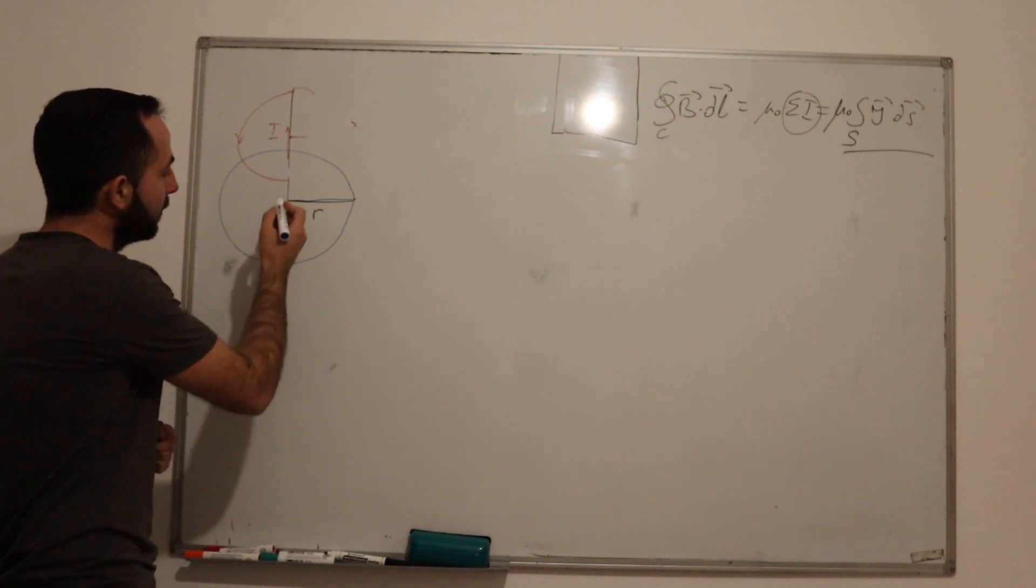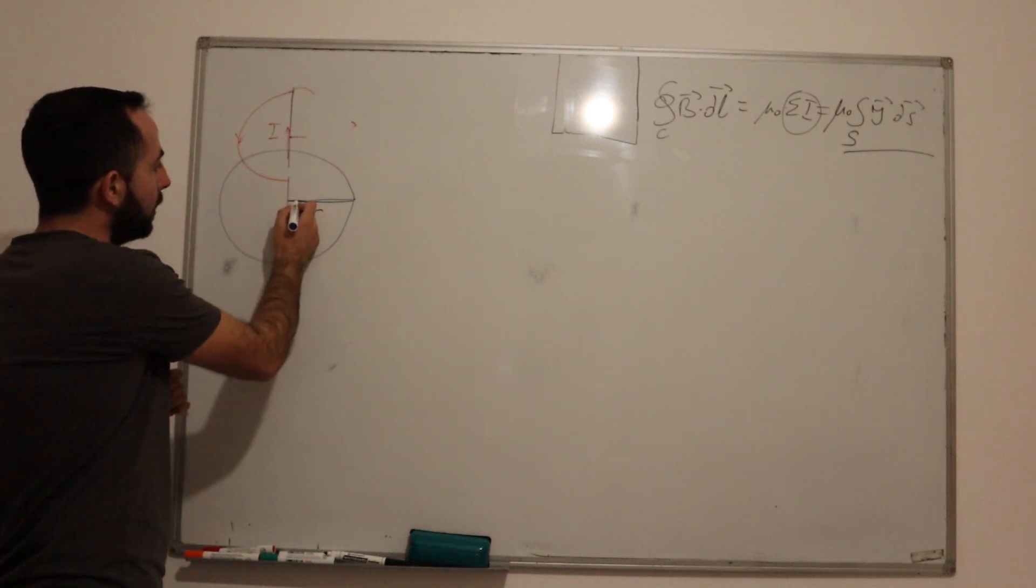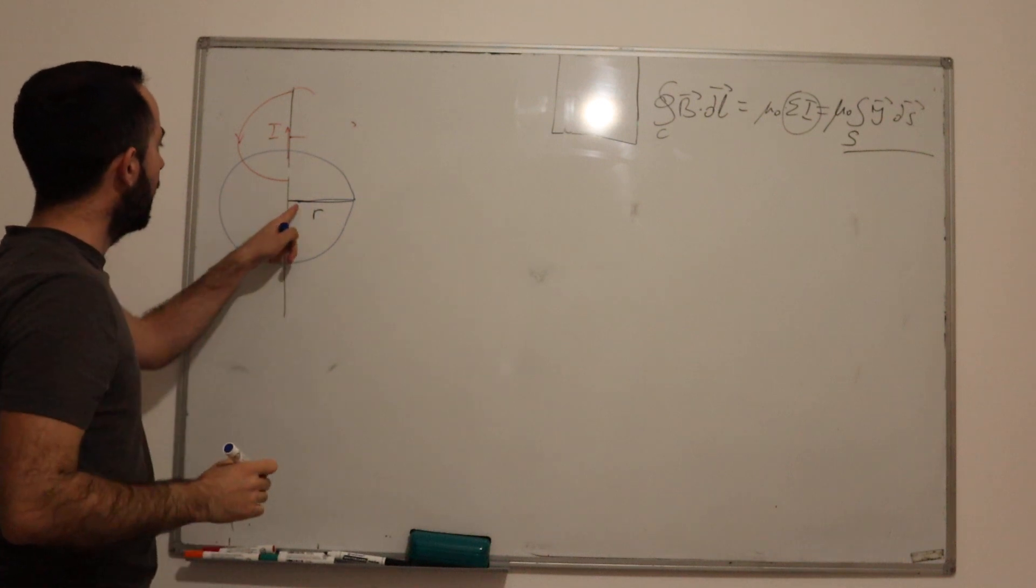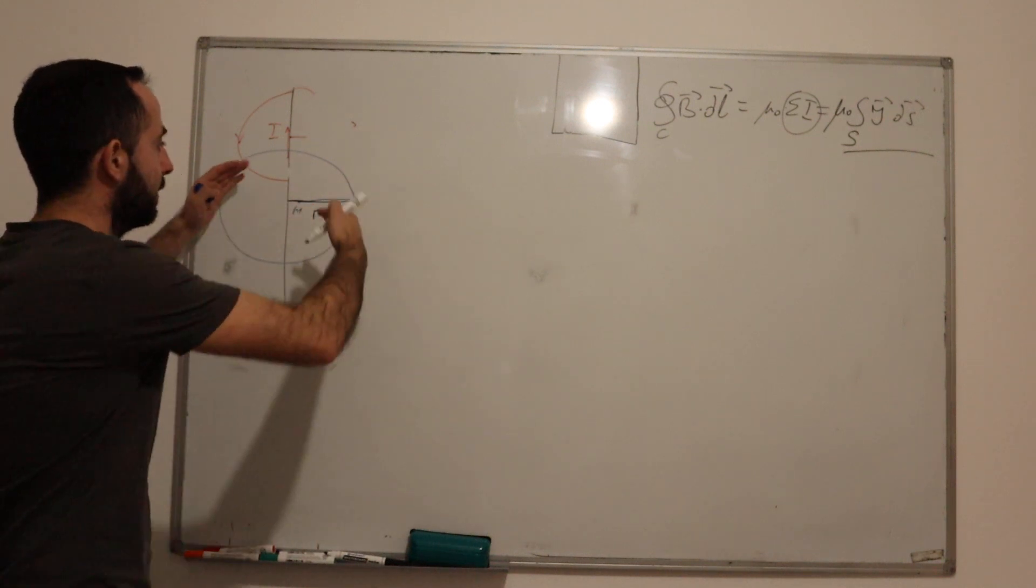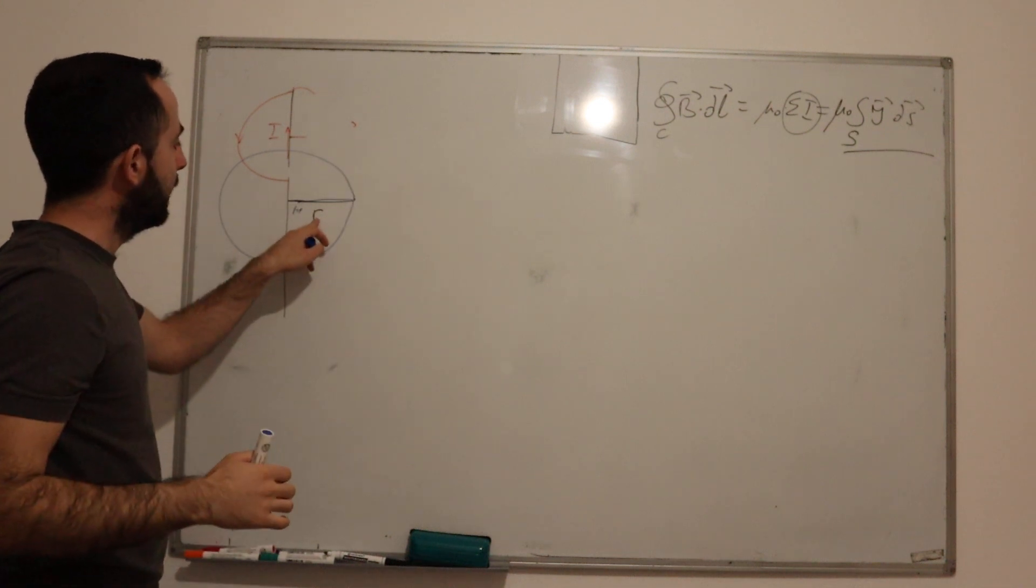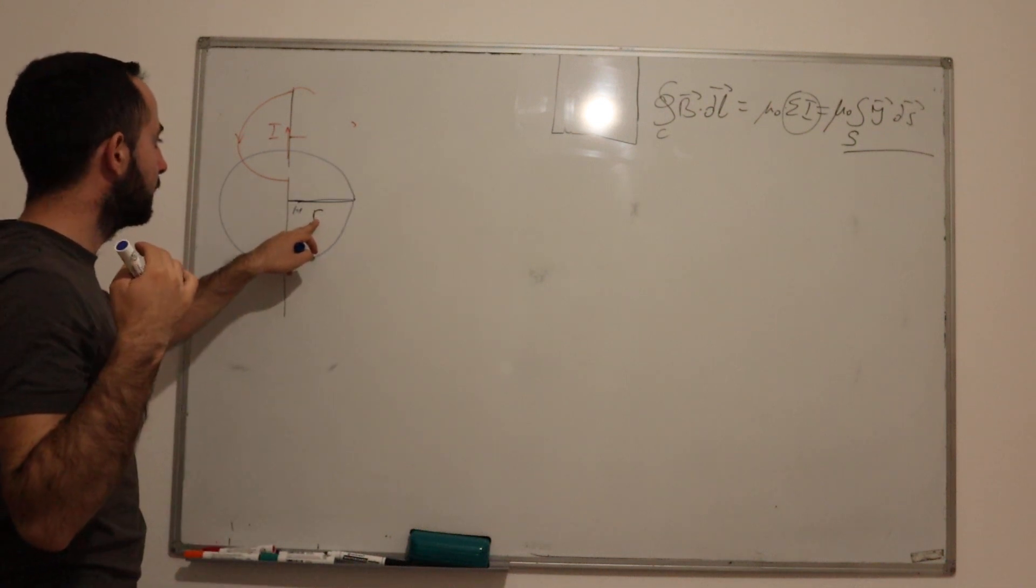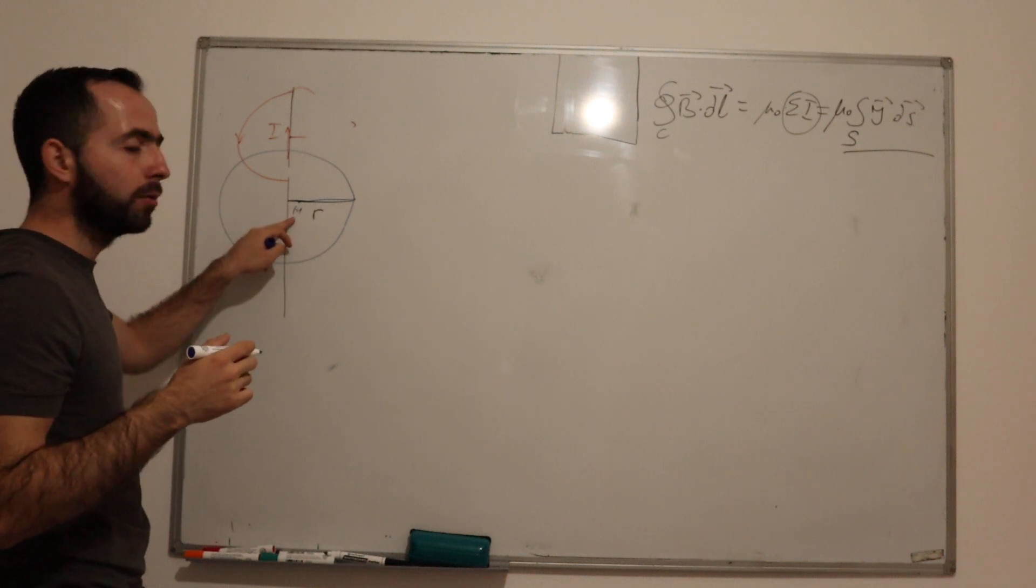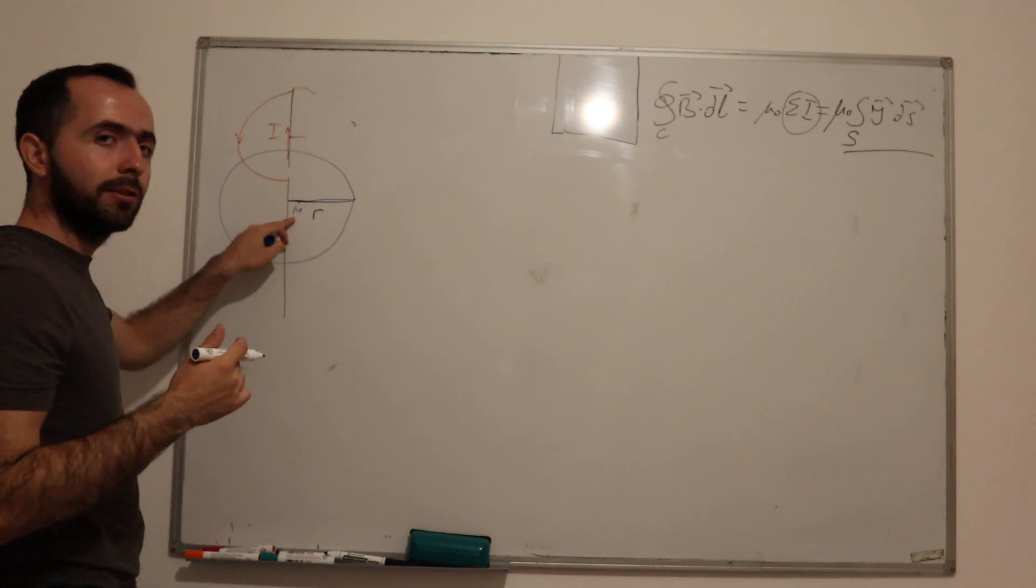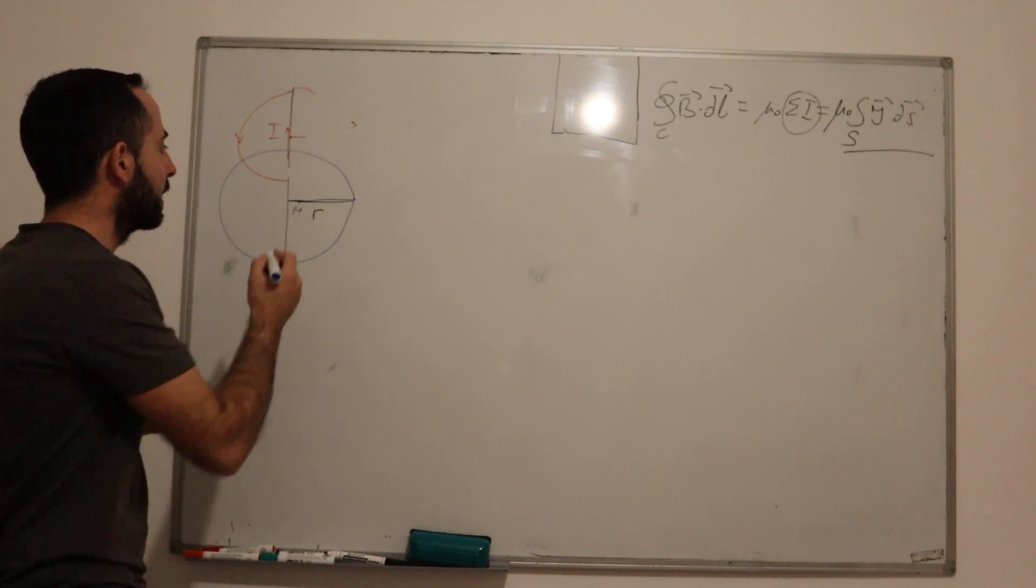If I want to calculate the value at this point where R, for example, is one, I will get a uniform formula for magnetic flux density as a function of R, and then I will put R equal to one and calculate my magnetic field.